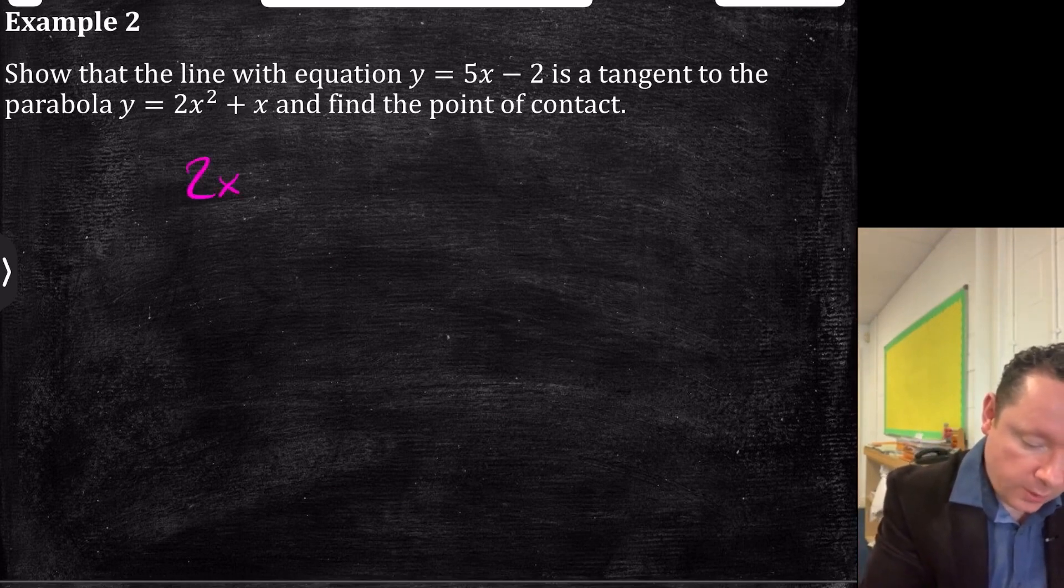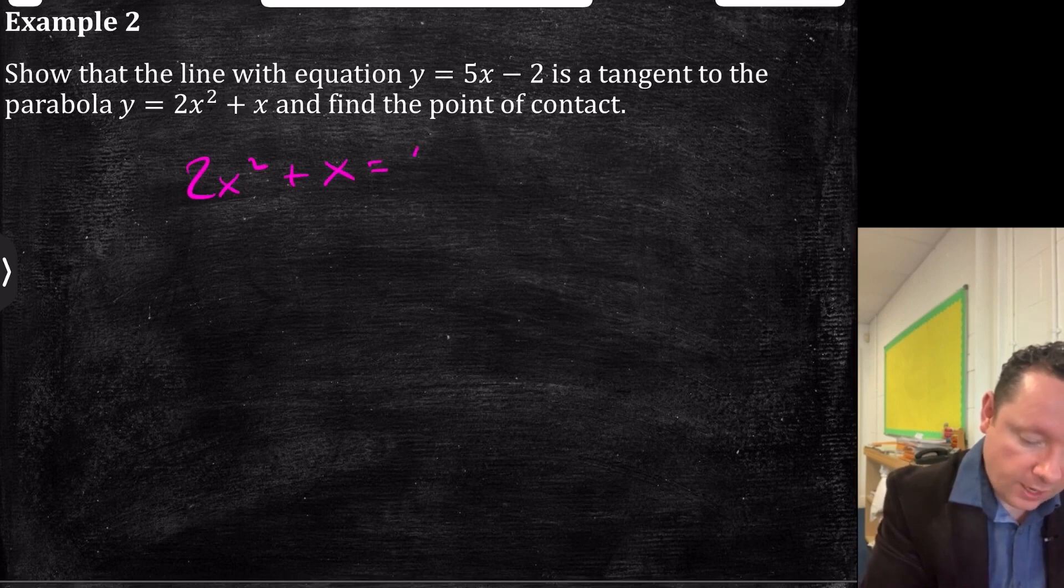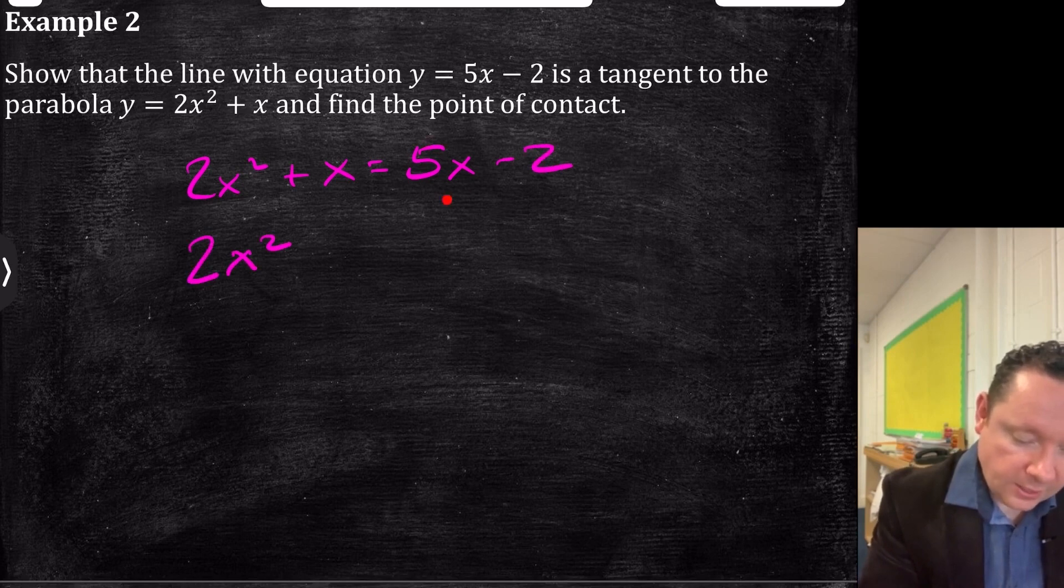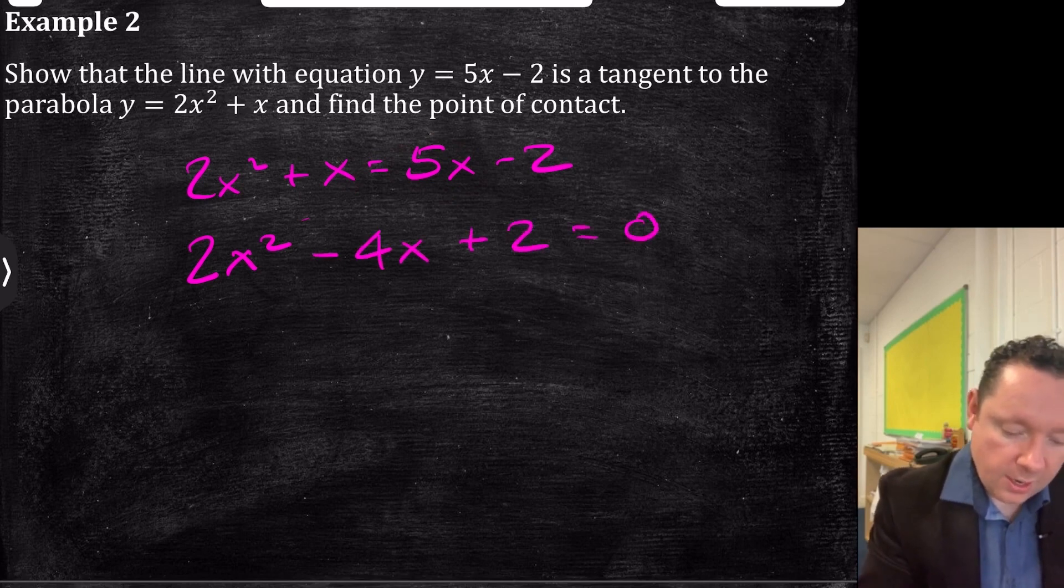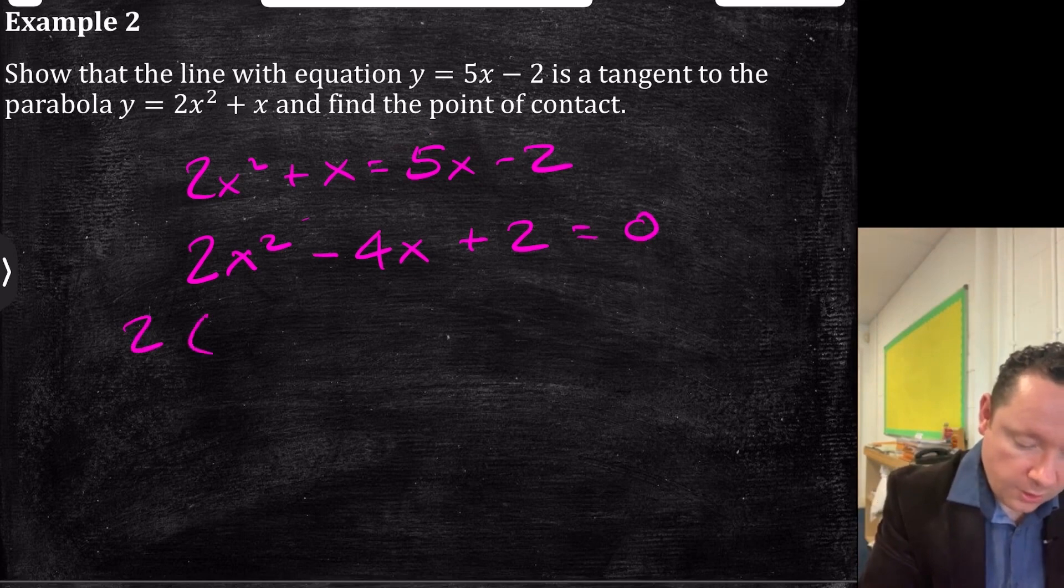We can say that 2x² + x = 5x - 2. That gives me 2x², taking the 5x is -5x, so that's -4x, -2 becomes +2. Now, we check, is there a common factor? Well, there is. I can take 2 out, x² - 2x + 1.